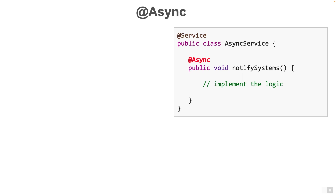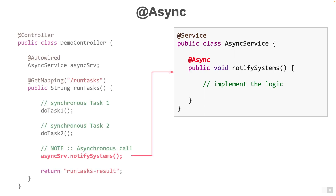Here we create a new Spring Bean called asyncService which is annotated with @Service. The method notifySystems is annotated with @Async because we want the method to be run on a different thread from the calling thread. In our example, the demo controller will call it. The demo controller class will auto-wire the async service and then call the method from within the runTasks method.